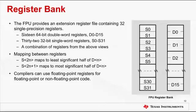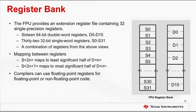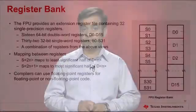The floating-point unit provides an extension register file containing 32 single-precision registers. There are 16 64-bit double-word registers D0 through D15, and 32 32-bit single-word registers S0 through S31. Compilers can use floating-point registers for both floating-point and non-floating-point code. Note that only single-precision floating-point is supported, except for two double-precision load and store instructions.